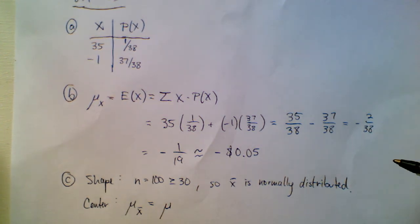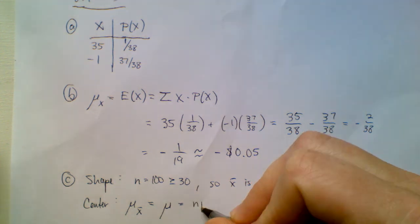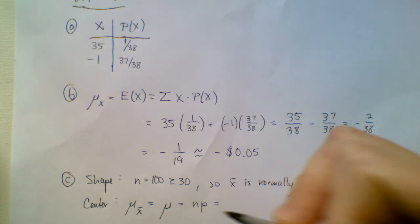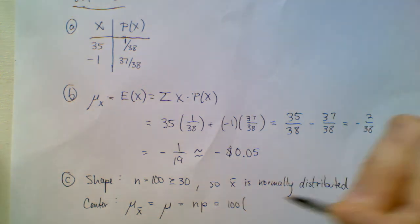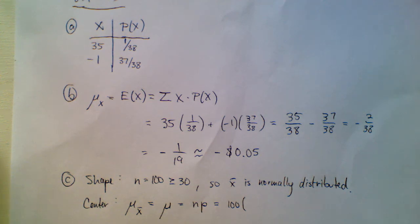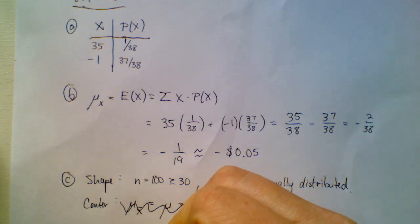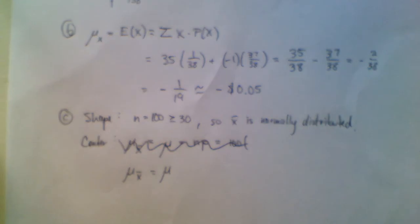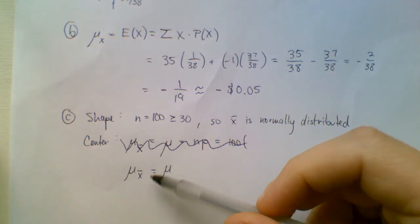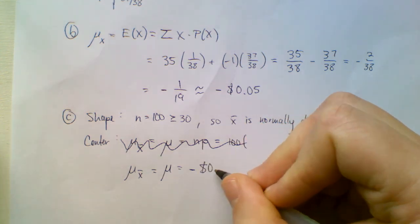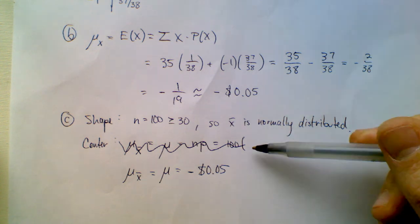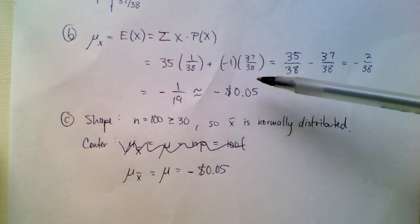So mu sub x-bar is the mean amount that you win per game — the same as the population mean. We already computed that in Part B, so it's negative 5 cents. That's the center.